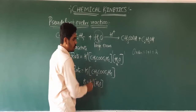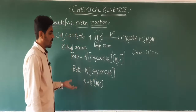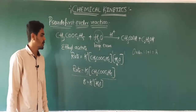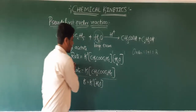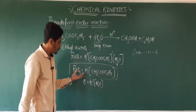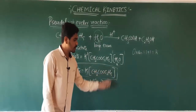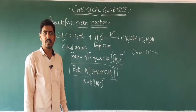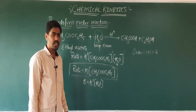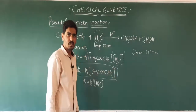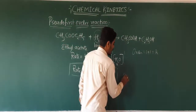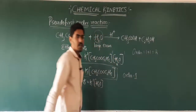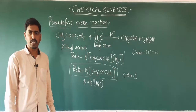K is nothing but K' into [H2O]. In general, we can write the rate expression for the hydrolysis of ethyl acetate as rate = K'[CH3COOC2H5]. When you observe this rate expression, the order of the reaction will be 1. Hence, we can say it is a first-order reaction.